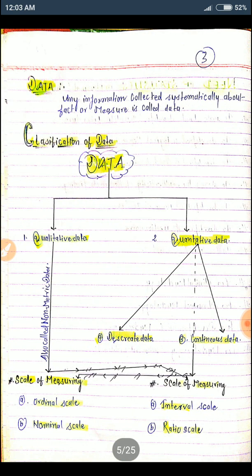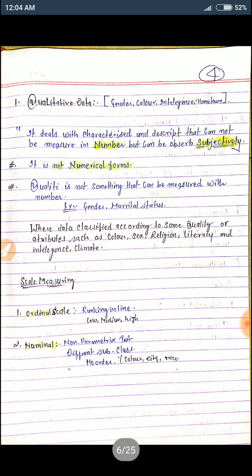Next in data, classifications of data: qualitative data and quantitative data. Skills of measuring: ordinal skills and nominal skills. And quantitative data, there are two types: discrete data and continuous data. Skills of measuring: interval scale and ratio scale.